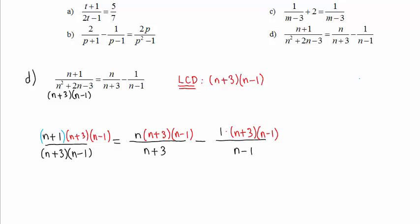Then, in each fraction, we divide out factors that match in the numerator and the denominator. Those divide to 1, as do these. And on the left side of the equal sign, we have n plus 1.